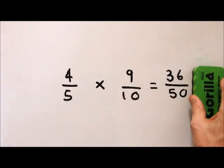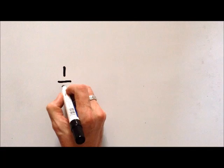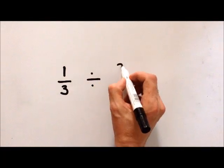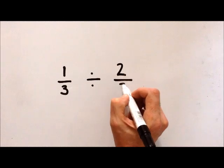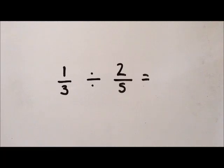Now we're going to go on to division of fractions. Here's our first problem: 1 and 1 third divided by 2 fifths equals. Now division of fractions is very similar to multiplication of fractions. If we know our inverse relations, we know that the inverse of division is multiplication, and we can use that knowledge to solve this problem.